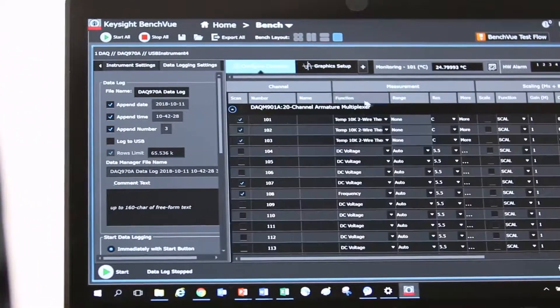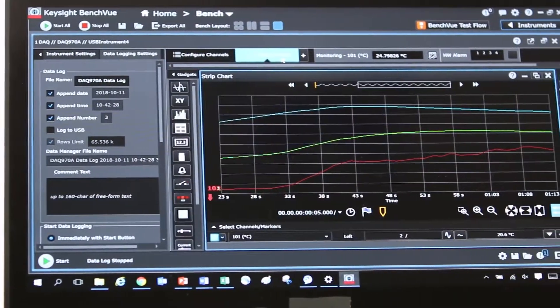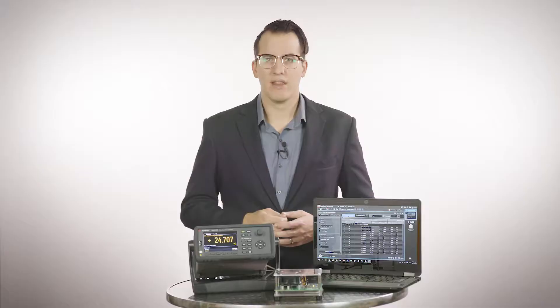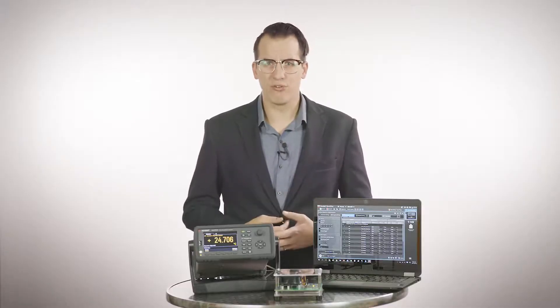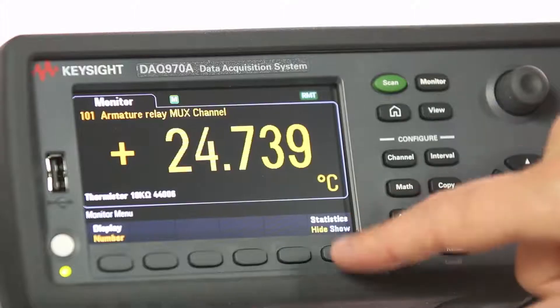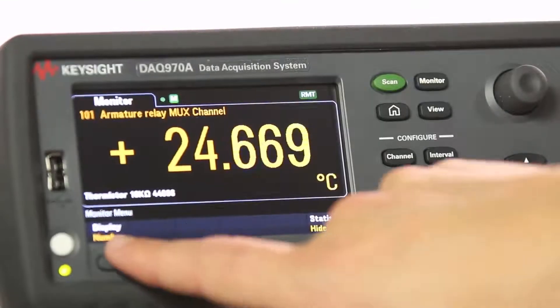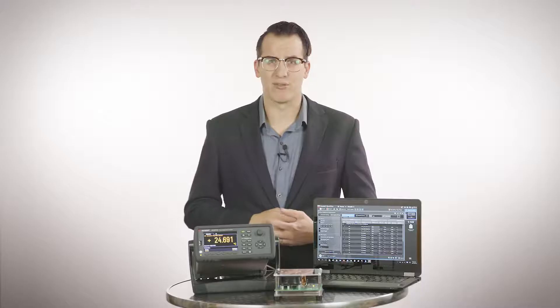The graphics panel allows you to data log and view measurement data in the format you need. There are multiple display types to choose from such as strip charts, XY charts, histograms, data grids, numbers, bar meters and other graphical representations.